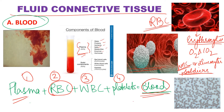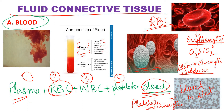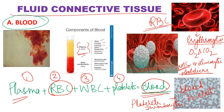Then we have the fourth component — platelets, also called thrombocytes. They help the blood to clot. Suppose you have cut your skin and there is bleeding, but within a few seconds the bleeding stops. This is because inside the blood there are platelets which act as clotting factors. They detect that blood is flowing out, start their function, and stop the bleeding, making the blood clot on the outer surface.